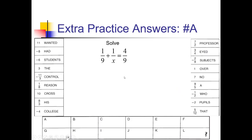Here we go with problem A. My strategy on all of these is going to be to first find the least common denominator of whatever fractions they give me, and then multiply all of the numerators by that so I can cancel out those denominators. Then once I do that, I'll just solve whatever's left. One thing we have to look out for at the end: if we have a variable in the denominator, we just have to make sure that none of the x values we come up with will give us 0 in any of the denominators.